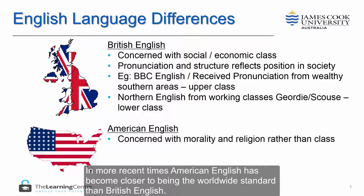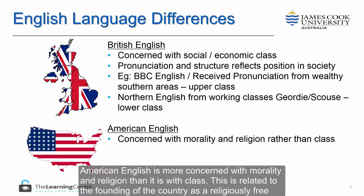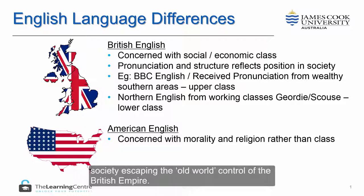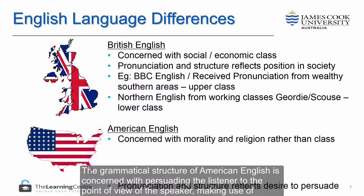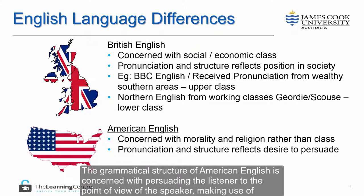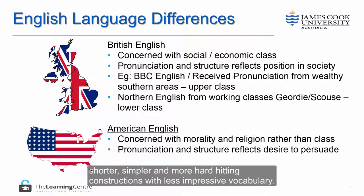In more recent times, American English has become closer to being the worldwide standard. American English is more concerned with morality and religion than it is with class. This is related to the founding of the country as a religiously free society escaping the old world control of the British Empire. The grammatical structure of American English is concerned with persuading the listener, making use of shorter, simpler, and more hard-hitting constructions with less complex vocabulary.